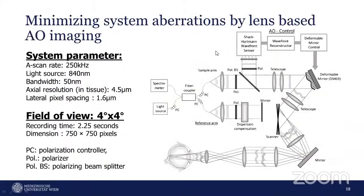The spectral domain OCT system used at the medical institute has a spectrometer with an A-scan rate of 250 kHz. The light source is centered at 840 nanometers with a bandwidth of 50 nanometers, providing an axial resolution of 4.5 microns and a pixel spacing of 1.6 microns. Recording time for a single volume is 2.25 seconds, with a volume dimension of 750 by 750 pixels.